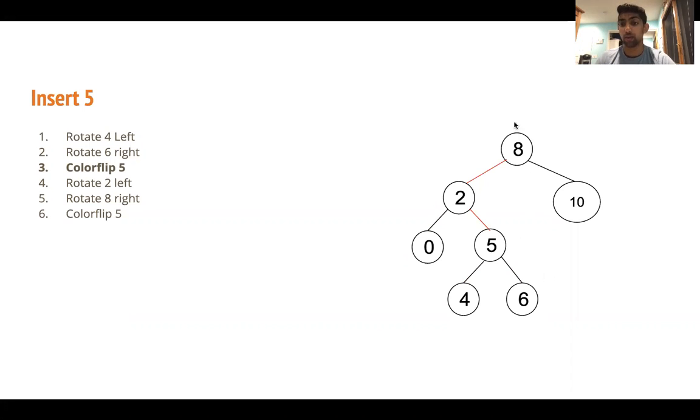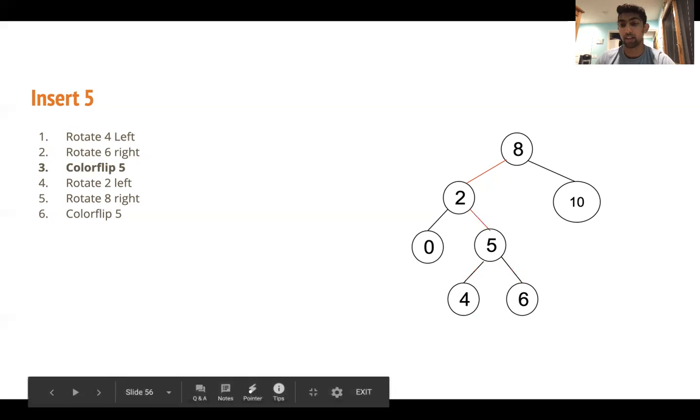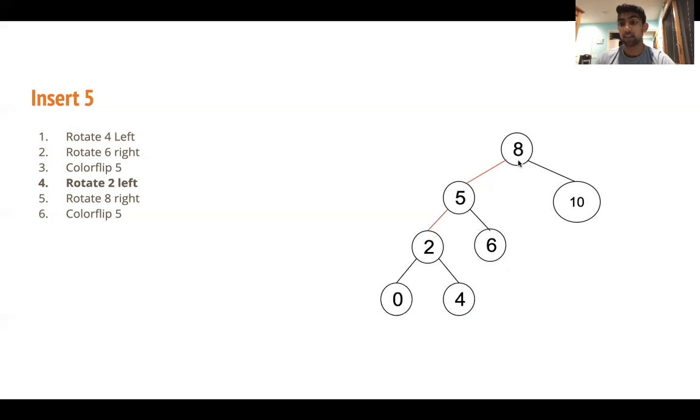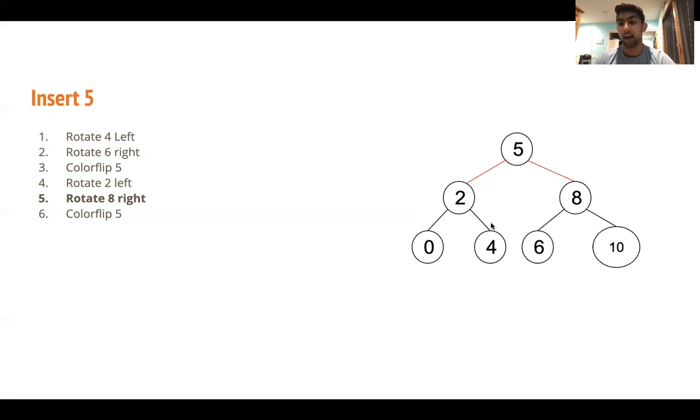Now we see that our root node contains three elements, and it's overstuffed. So to solve this problem, we need to color flip on the root node. But it's not in a correct configuration to color flip, so what we need to do is this V looks very similar to this V that we were dealing with before. So we can apply the same logic. What we'll do is rotate 2 to the left, then we will rotate 8 to the right. Now we have 5, the 5 node at the top, and it's in a correct configuration to color flip. So what we'll do is color flip 5.